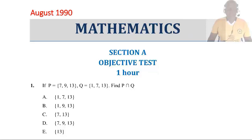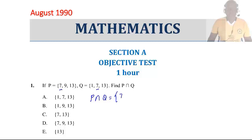Question 1: If set P equals {7, 9, 13} and set Q equals {1, 7, 13}, find P intersection Q. For an element to be a member of P intersection Q, it should be a member of P and also a member of Q. 7 is in P and Q; 13 is in P and Q. So the answer is C.